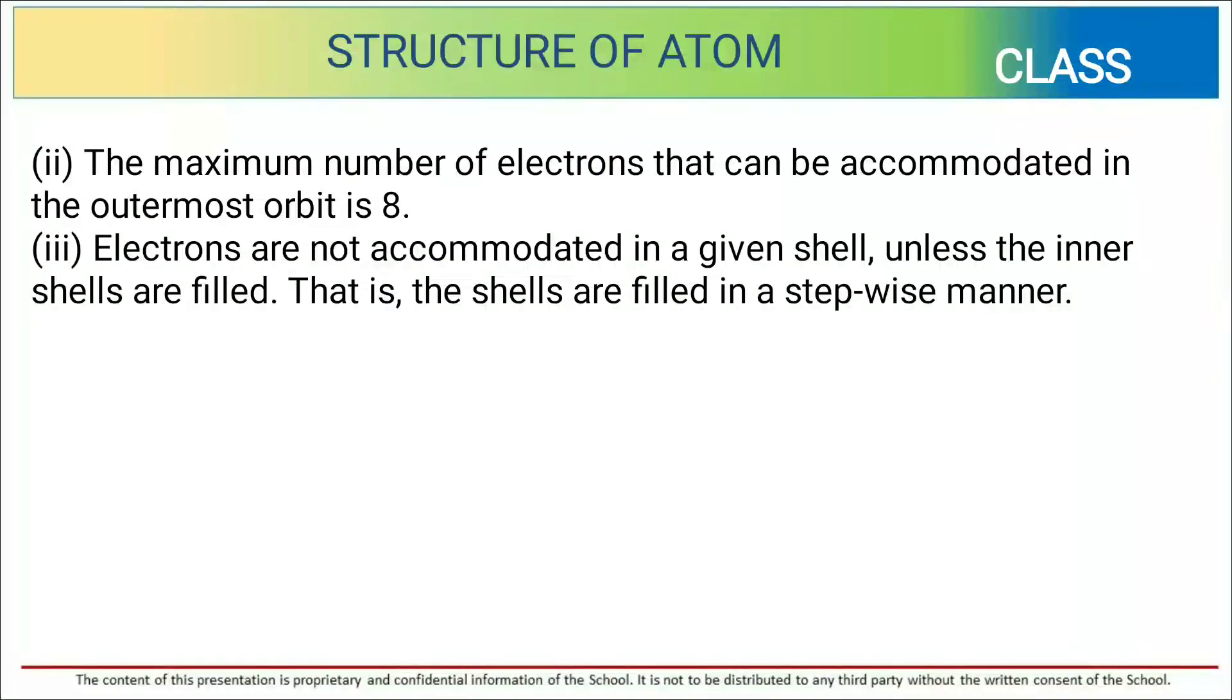The maximum number of electrons that can accommodate in the outermost orbit is 8. Electrons cannot accommodate in a given shell unless their inner shells are filled. So first K shell will be filled, then L, then M, and then N.